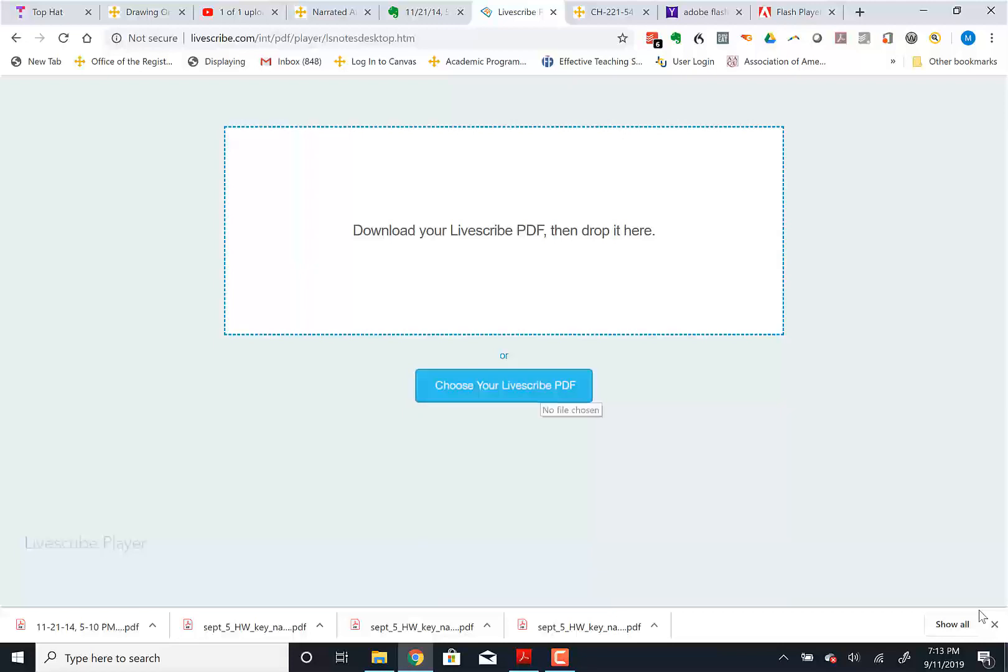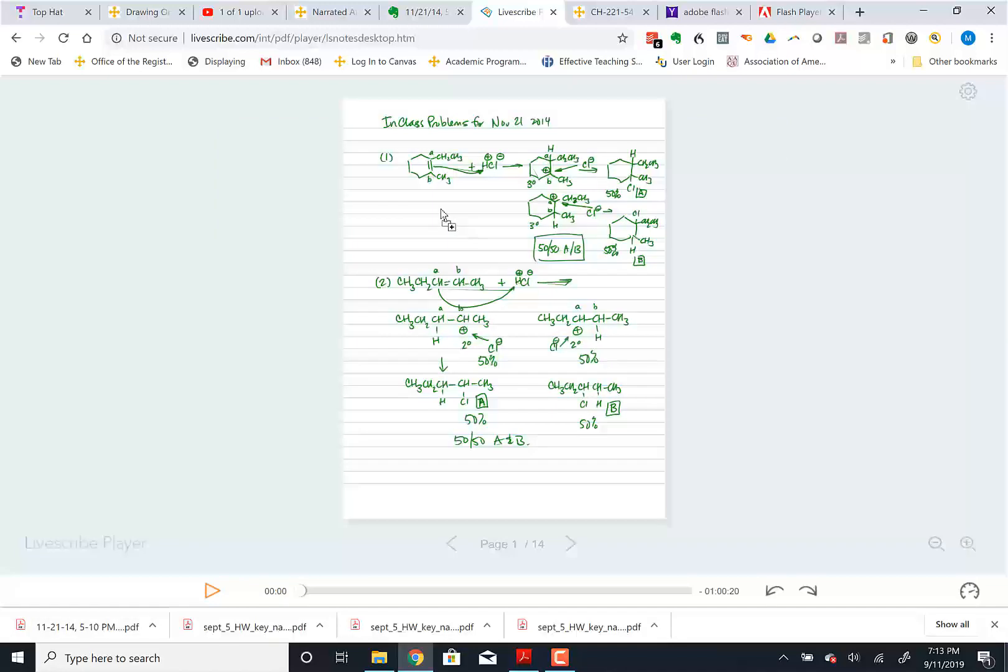So now it says download your Livescribe PDF and then drop it there. Or you can use the blue one to have a menu system. So if I'm in a system like this where it's already downloaded, I can grab it, bring it up here, and throw it in the player. And then now I'll see. Now I'll have control over the player.